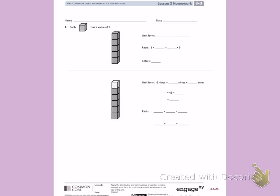Number 1, each cube has a value of 9. So if I look at this, I know that 1 cube is 9. I have 1, 2, 3, 4, 5 groups of 9. As unit form, this is written as 5 nines.